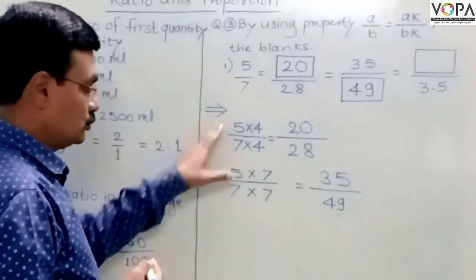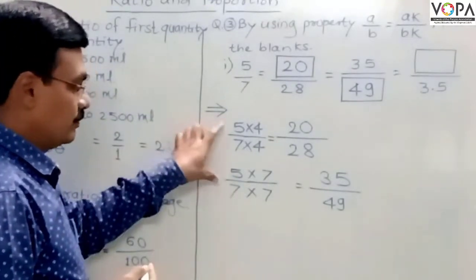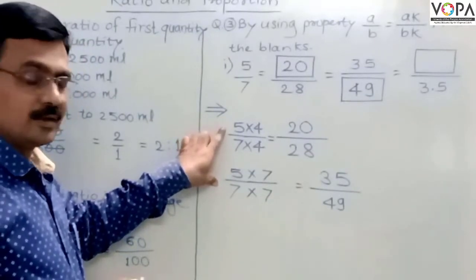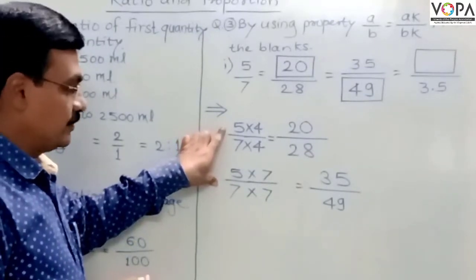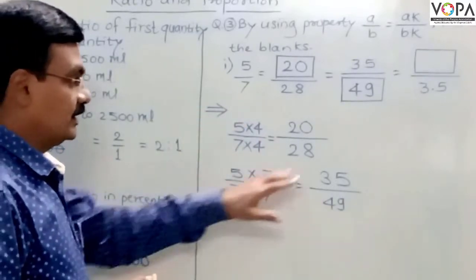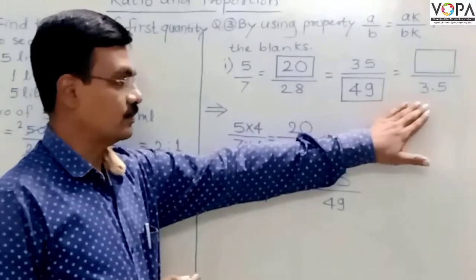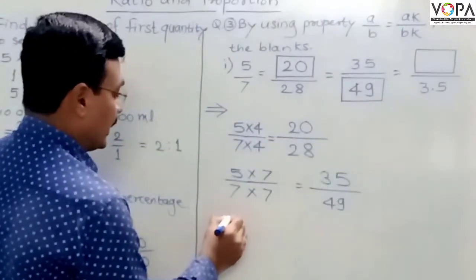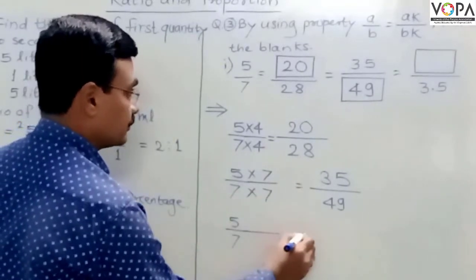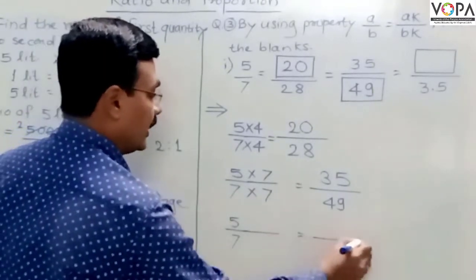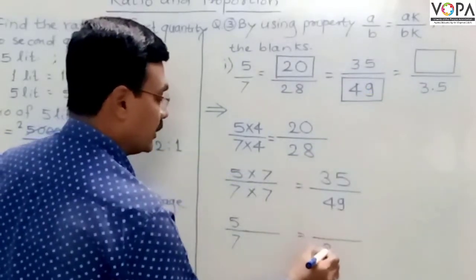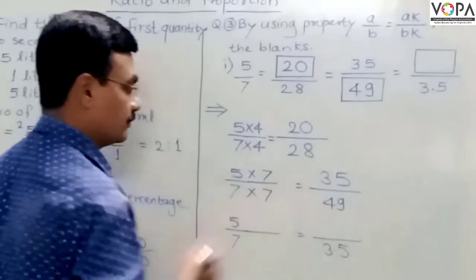In those two examples, we multiplied the terms of the ratio by a suitable same non-zero number. Now this is the third example: write the original ratio 5 upon 7, where the denominator of the required ratio is 3.5.